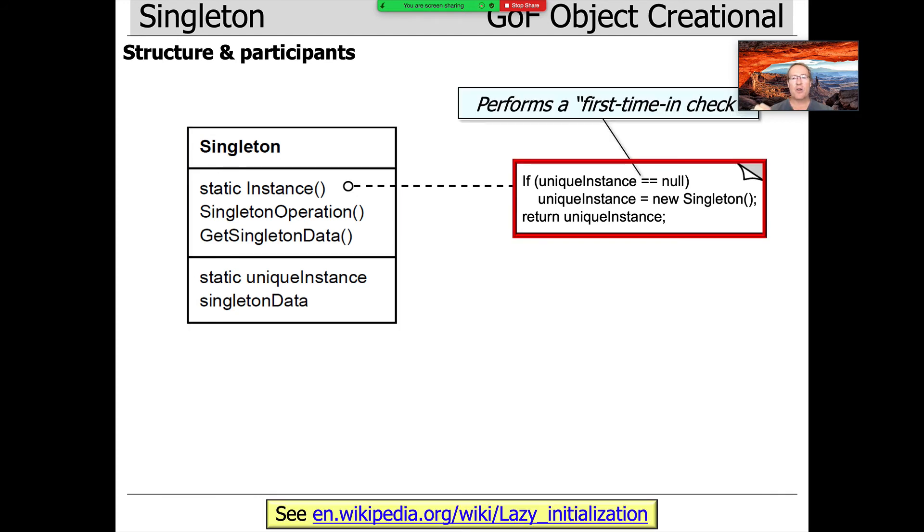When you make an invocation on the instance method, the static method, it checks to see if the static field or static data member, which we call unique instance in this case, is null or not. If it is null, we allocate the one and only instance of the singleton.